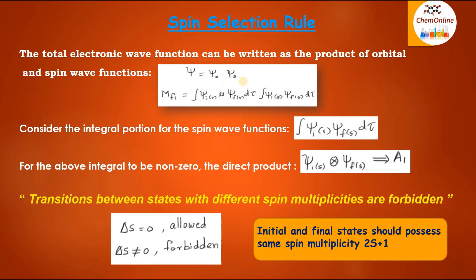And hence, the expression for transition moment MFi may be written as MFi equals the integral of ξiO · μ · ξfO dτ, into the integral of ξiS · ξfS dτ. Here, ξI and ξF represent the initial and the final state wave functions, where the O and S subscripts denote the orbital and spin components. Since the electric dipole moment operator μ does not interact with the electron spin, it does not appear in the integral for the spin component.